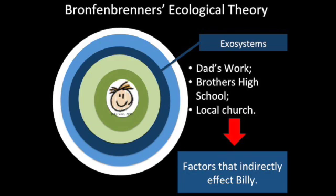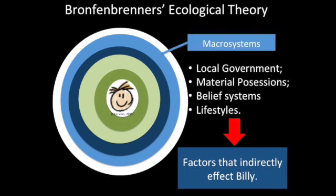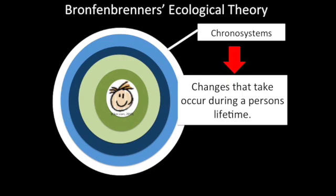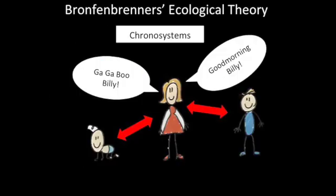The exosystem refers to contexts that don't exactly involve Billy but affect him indirectly — for example, Billy's dad's work. The macrosystem is the environment that provides cultural values, political policies or economic decisions that influence Billy indirectly. The chronosystem refers to contextual changes that occur over time. The way Billy's mum speaks to him now is more advanced than when he was younger.